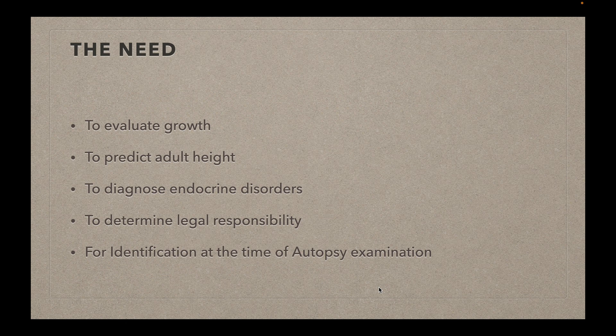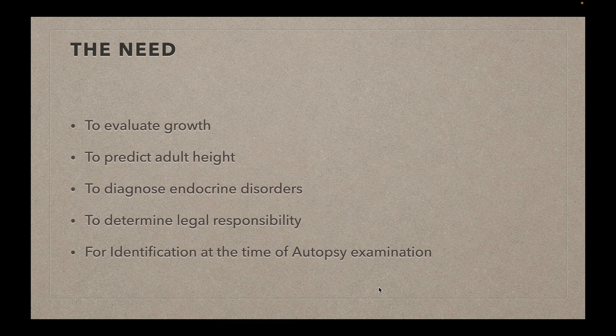Why do we need to estimate age from hand and wrist x-rays, or for that matter anywhere in the body? The most important reason is to evaluate growth and development in growing children and to predict adult height in cases of developmental disorders. We also use it to diagnose endocrine disorders, and most importantly to determine legal responsibility, especially where the age of the child is between 16 to 18, where the punishment awarded depends upon the child's age. Lastly, it is used for identification at the time of autopsy examination, especially for unknown bodies brought for autopsy.